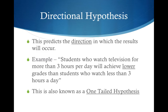Another hypothesis you need to know is the directional hypothesis, which predicts the direction in which results will occur. For example: 'Students who watch television for more than three hours per day will achieve lower grades than students who watch less than three hours a day.' The direction chosen here is lower grades. A directional hypothesis is also known as a one-tailed hypothesis, because the result can only go one way — either higher or lower, not both.